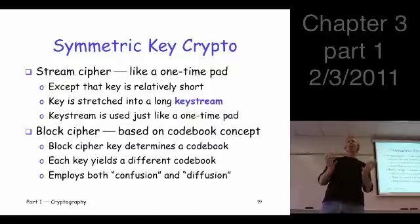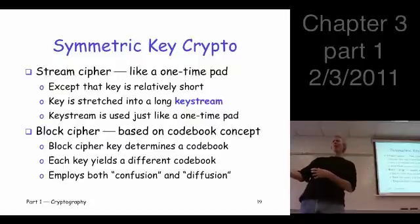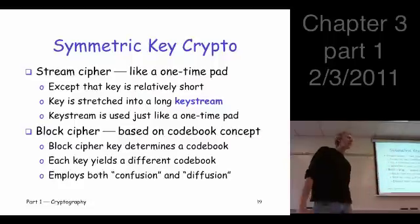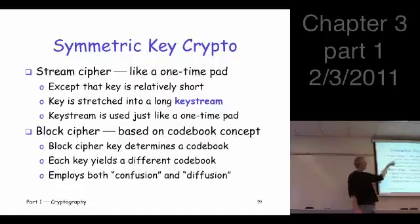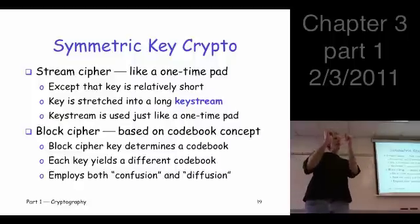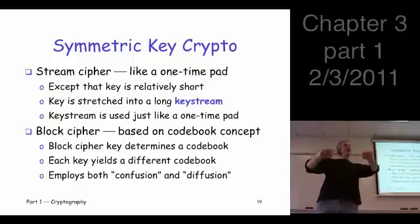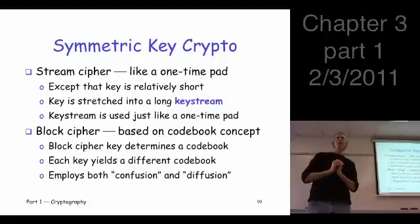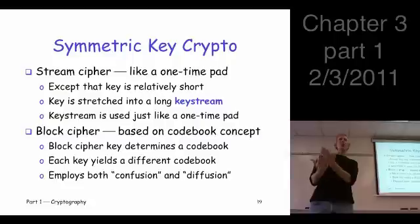We're going to get a practical system where the key is small and we can encrypt lots of bits, but the trade-off is there's no way to get that provable security we had with the one-time pad. We like the concept though — XOR to encrypt, XOR to decrypt. So we take the key, put it into an algorithm, and stretch it out into a long string of pseudorandom bits, which we call a key stream, and XOR that to encrypt and again to decrypt.